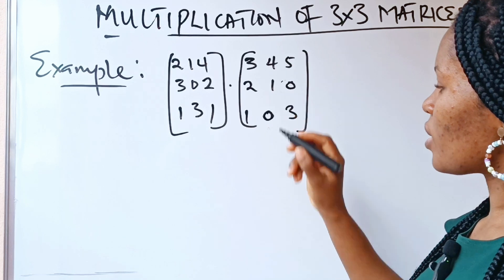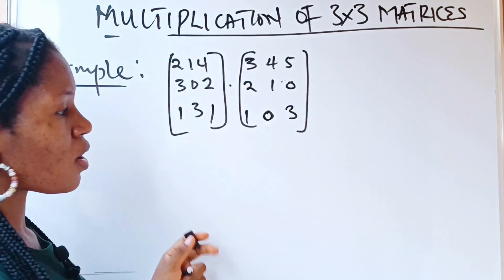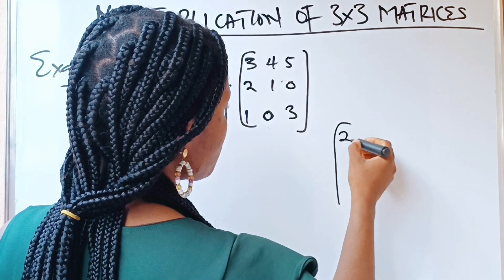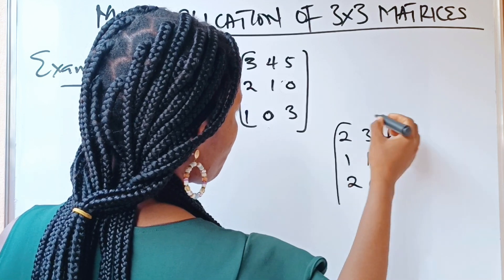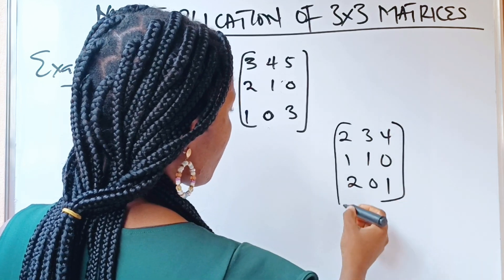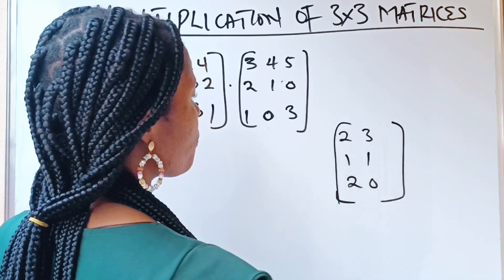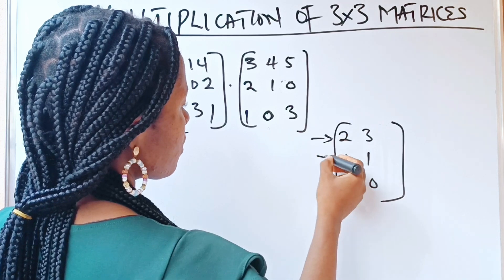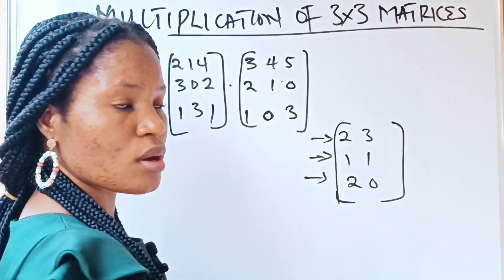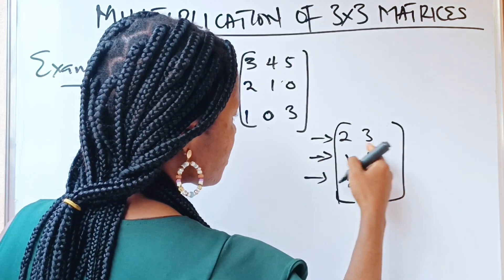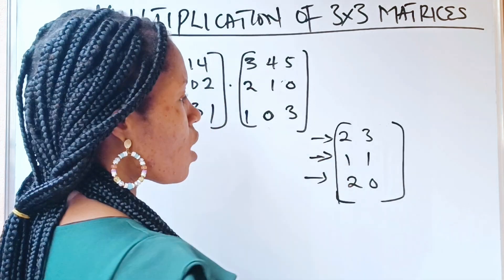What do I mean by that? If this is a matrix — 2, 3, 4, 1, 1, 0, 2, 0, 1 — these horizontal arrangements are rows. So 2 and 3 is the first row, 1 and 1 is the second row, and 2 and 0 is the third row.